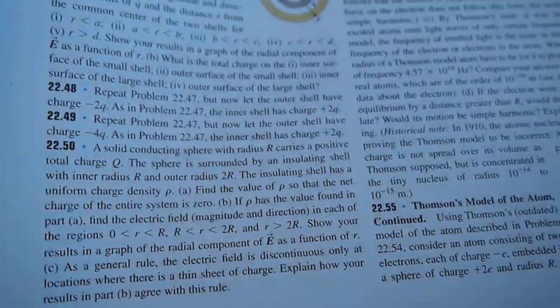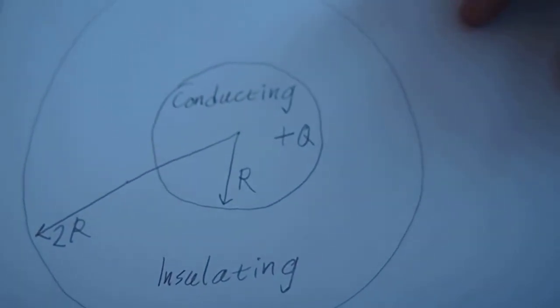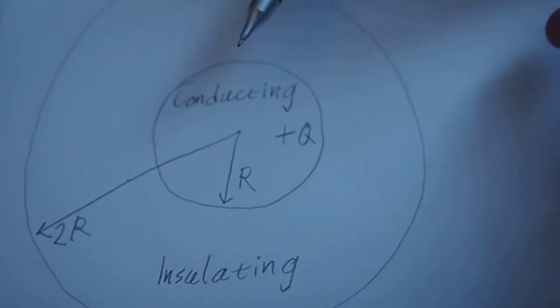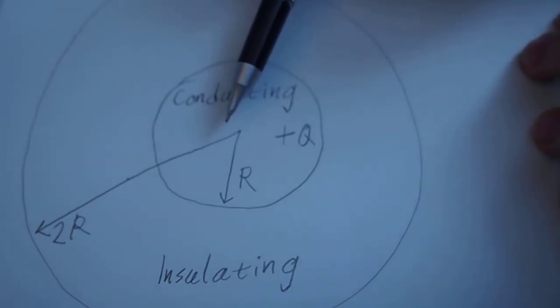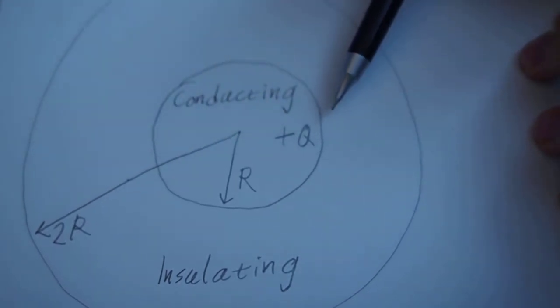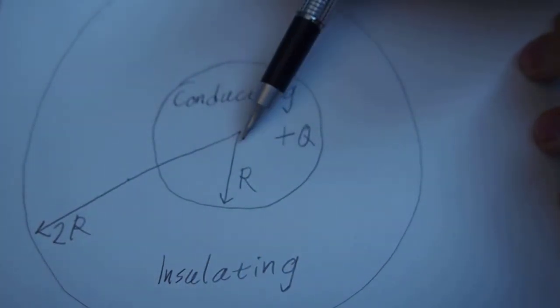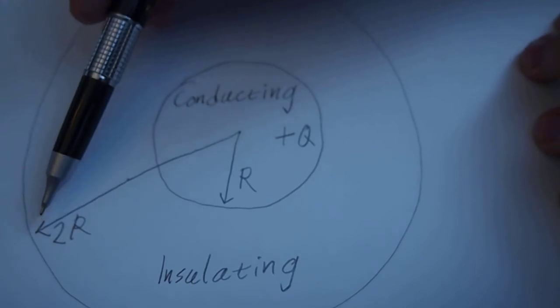Okay, so first, as always, draw a picture. We have our conducting sphere on the inside and our insulating sphere on the outside. This is radius R. This is radius 2R.